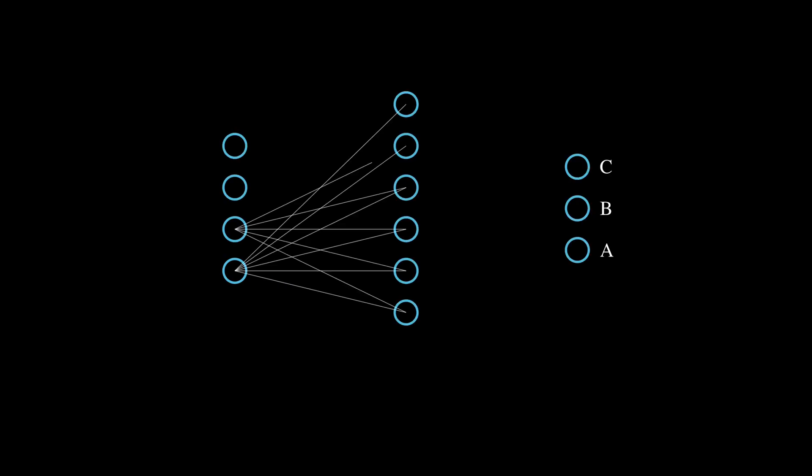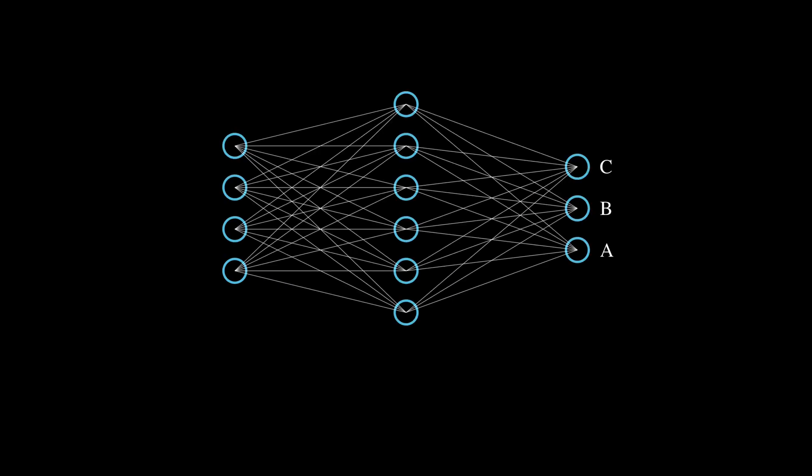Imagine we have a neural network trying to classify an input into one of three categories, A, B, or C. The network gives us a prediction like 0.2, 0.3, 0.5,